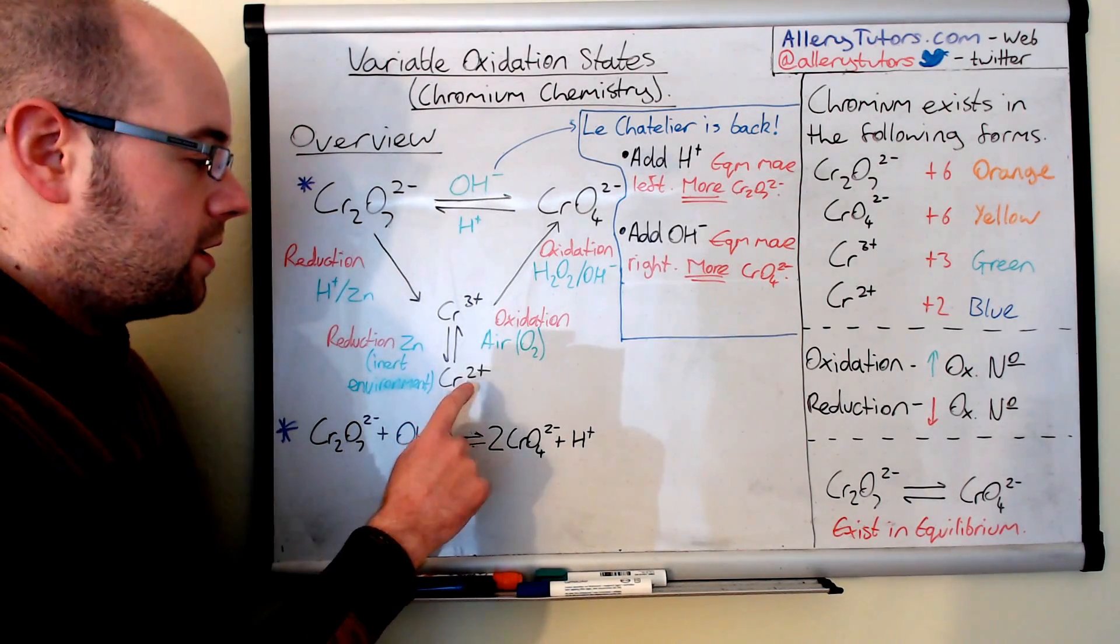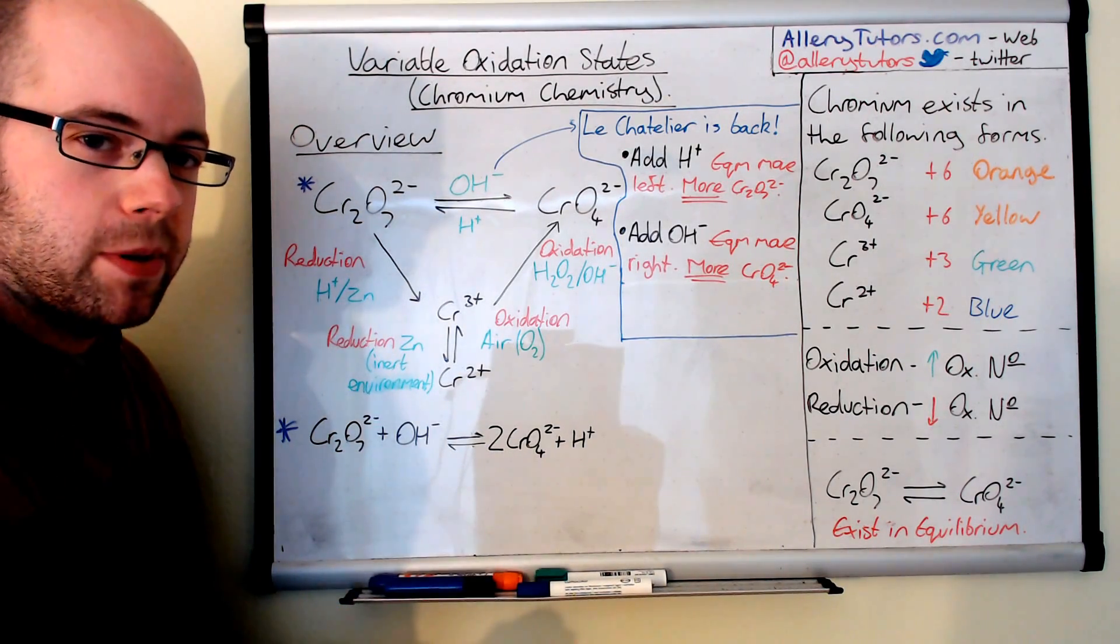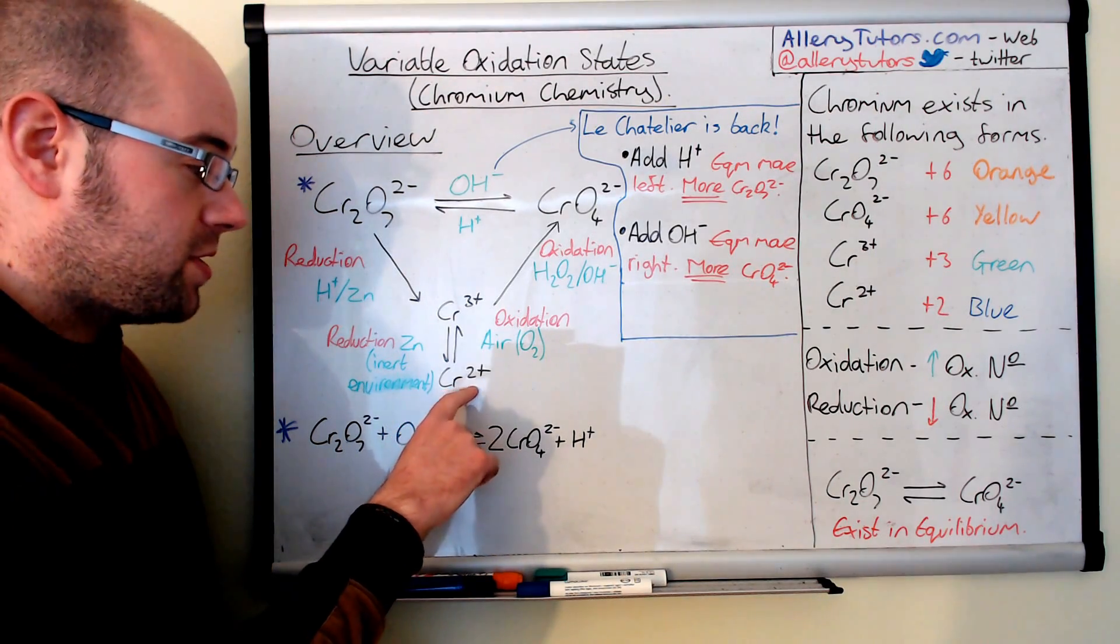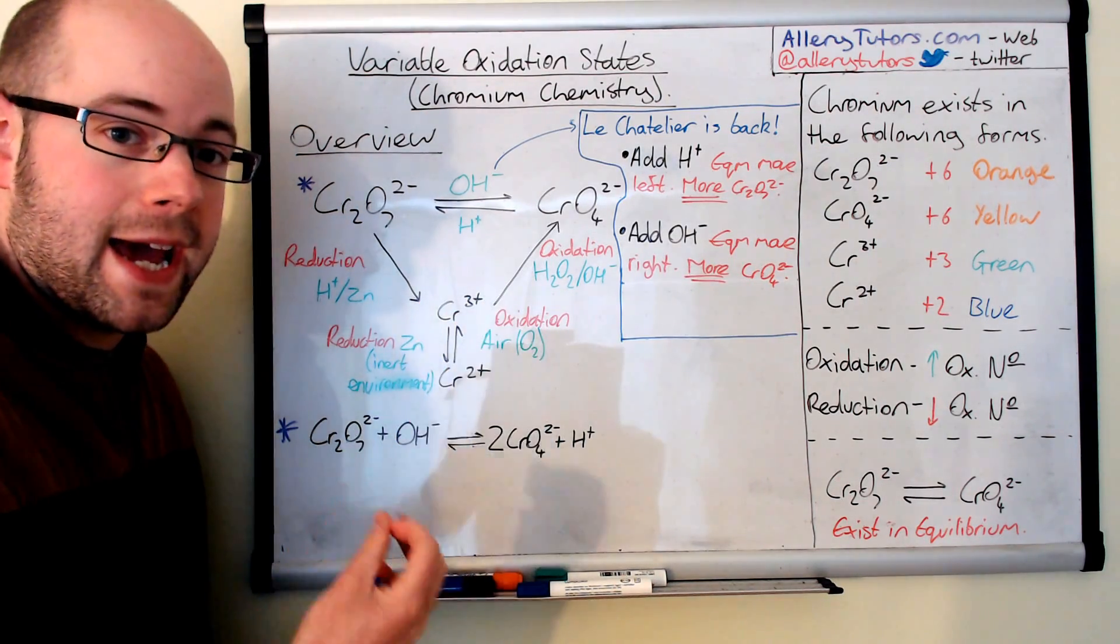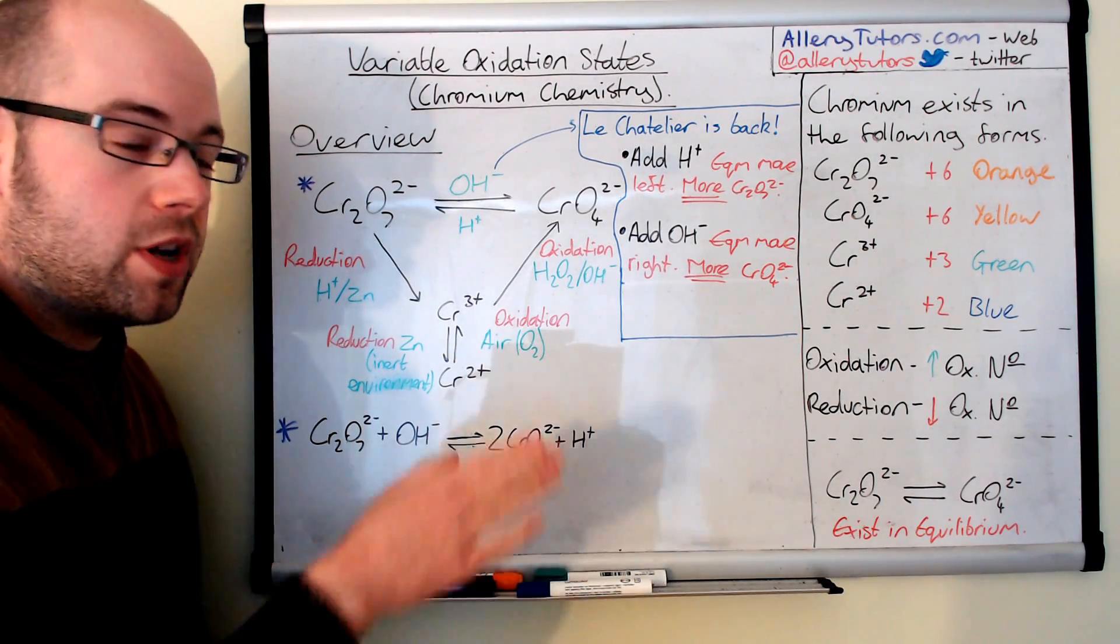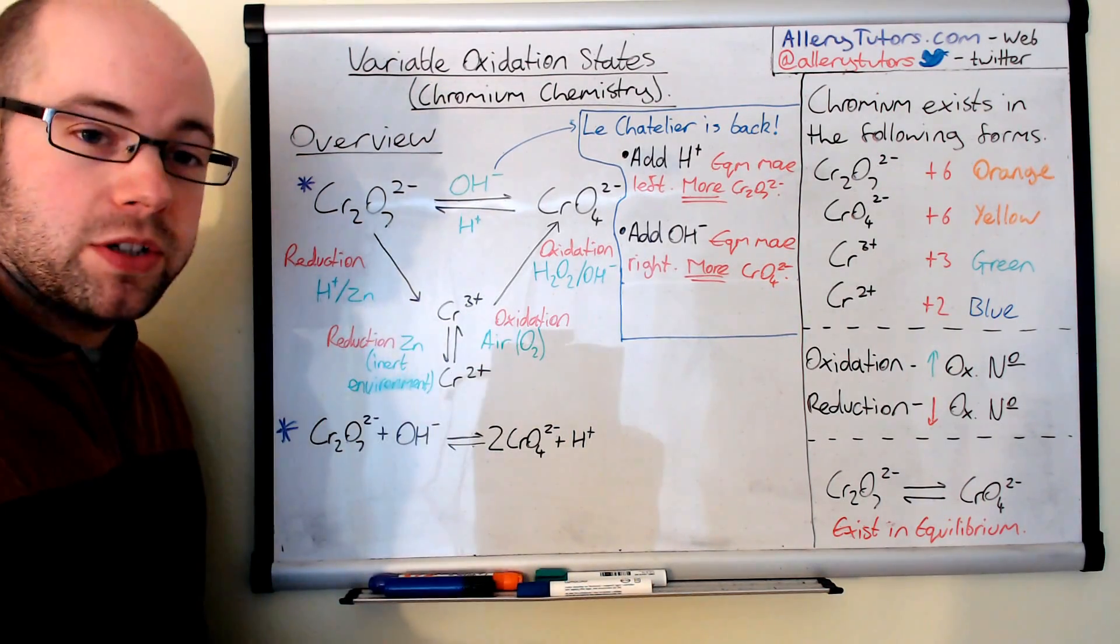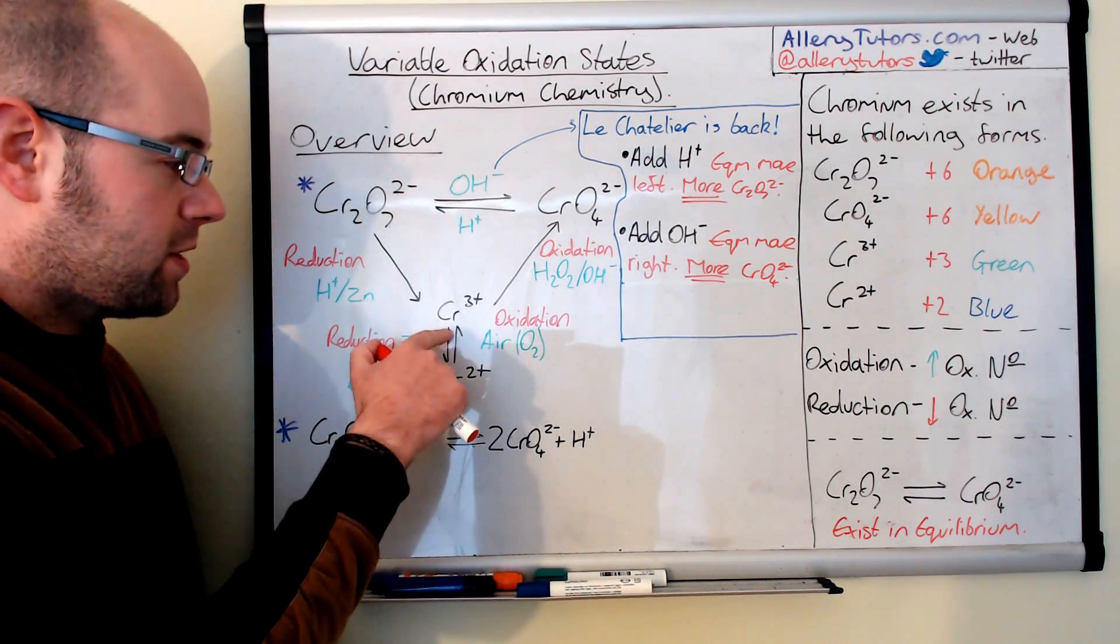And there's one more bit here as well, which is chromium 2+. Now chromium 2+ is blue in colour, and it's really unstable. In fact, so unstable, that as soon as it's formed, if you've got any air in your reaction vessel at all, or any contact with oxygen, it will readily oxidise back to Cr³⁺. It's really difficult to make.